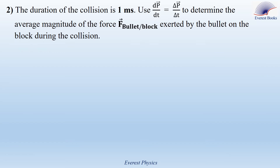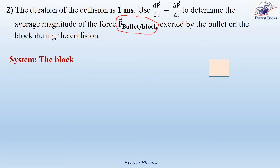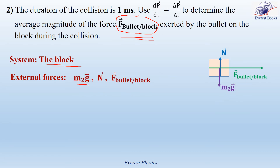Part 2. The duration of the collision is 1 millisecond. Use dP/dT equals delta P over delta T to determine the average magnitude of the force exerted by the bullet on the block during the collision. Take into account that you can't take your system as the block and the bullet, because in that case the force of bullet on block would be an internal force acting inside the system. If you want this force to be an external force, you must take the system as the block only. The external forces acting on the block are: its weight M2g, the normal force exerted by the ground, and the force of bullet on block.